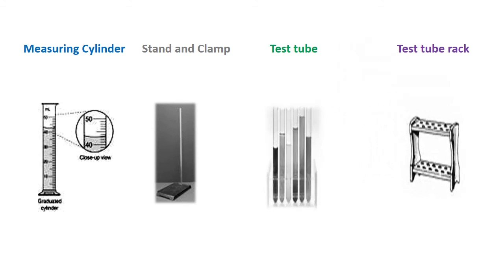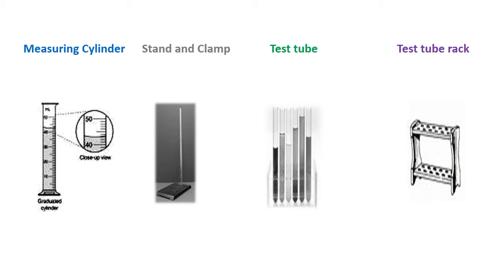Now we have the measuring cylinder. Then we have the stand and clamp, which looks like a scale. And then we have the test tube, which you can see is placed in the test tube rack. The test tube rack has little holes on the top and at the bottom where the test tubes are placed inside. So those are some more pictures of laboratory apparatus used in the science lab.